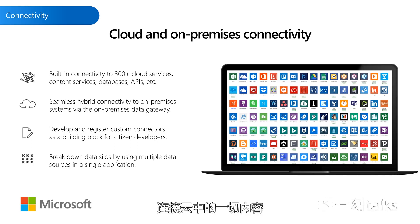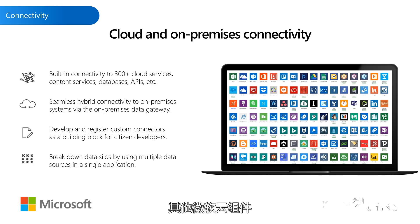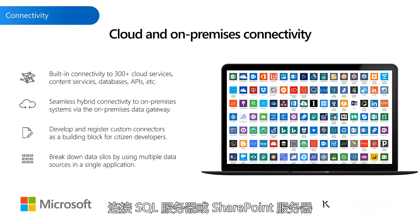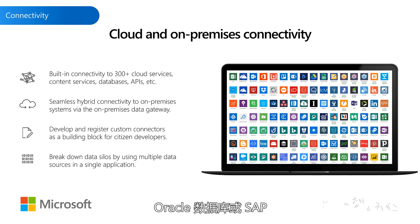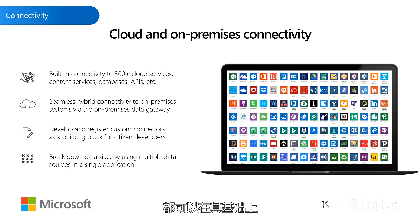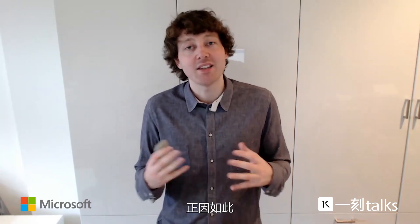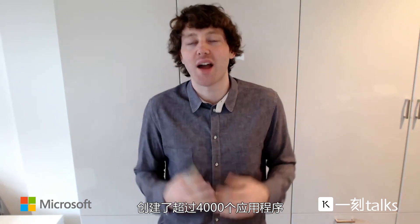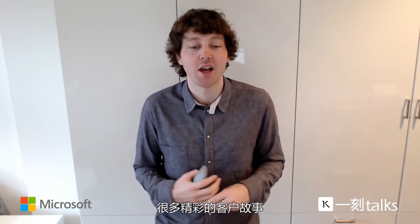The first is it connects to everything in the cloud — other SaaS applications, other Microsoft Cloud components running inside your enterprise, you can connect to without any effort. But for all the assets and infrastructure which run on-premise, we have the on-premise data gateway. So you can use these same connectors to connect to a SQL Server, SharePoint Server, Oracle database, or SAP — whatever is running on-premise in your own data centers on your own private network. This makes it possible so that even if elements of your IT landscape aren't very modernized, you can still start to use Power Platform on top of it. And this is how we have customers who in just less than 12 months of adopting Power Platform can go from zero to over 4,000 applications.